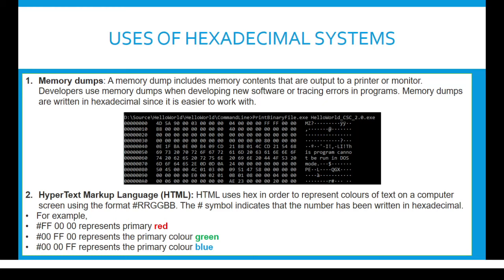Hypertext Markup Language, or HTML, uses hex in order to represent colors of text on a computer screen using the format #RRGGBB. The hashtag symbol indicates that the number has been written in hexadecimal. For example, the first code represents the primary red color, the second code represents the color green, and the third code represents the color blue.